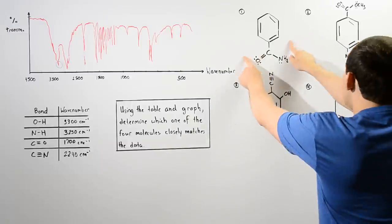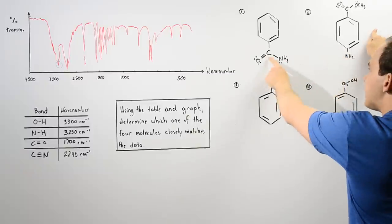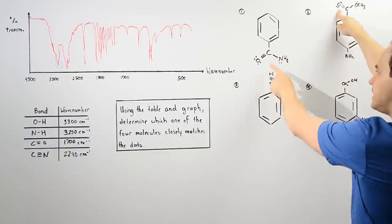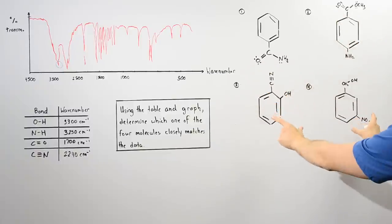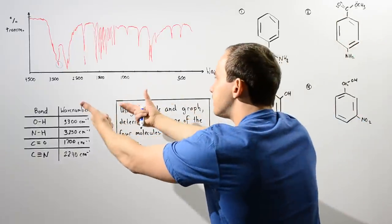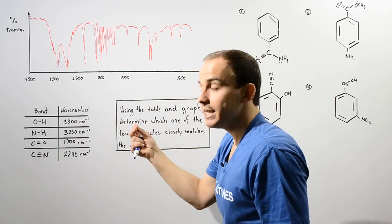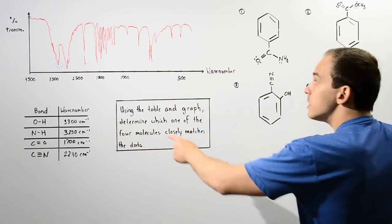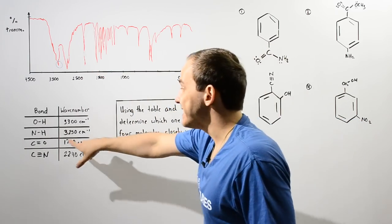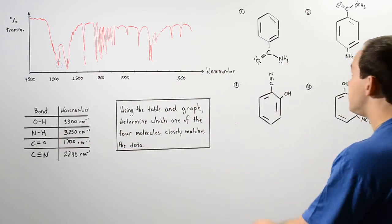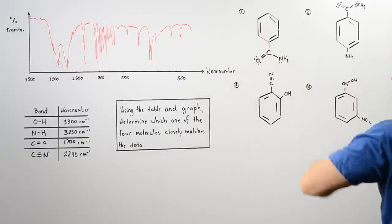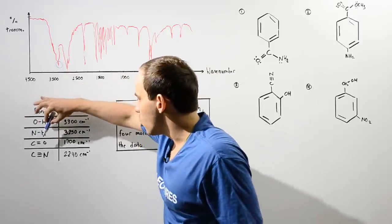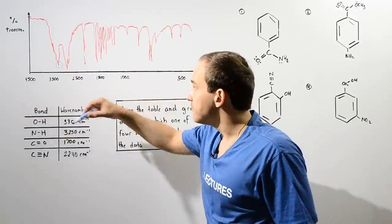Molecules one and two have the C double bond O, while molecules three and four do not. If we go to the table and see that there is no dip for this particular bond, then it cannot be molecule one or molecule two. The C=O bond has a peak at 1700.